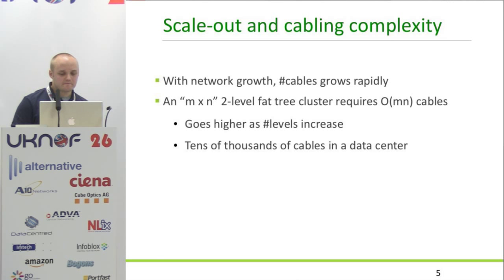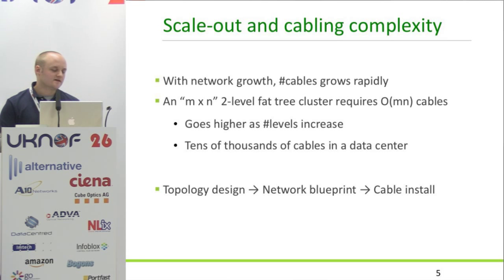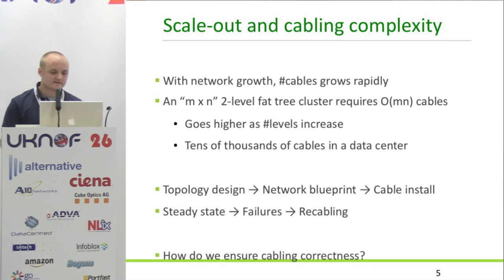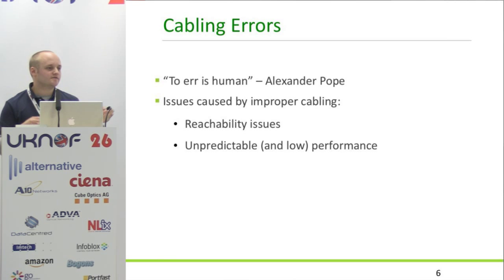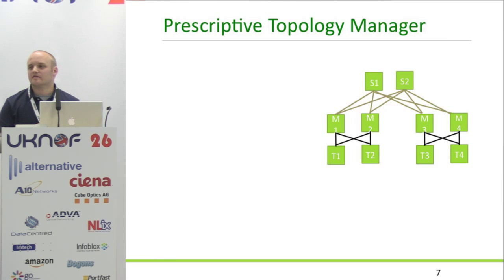The cabling can become a nightmare as these properties grow. Normally you'll give a design — maybe a Visio diagram with a cable reference — and hopefully the people installing the kit will follow that, but that's not always the case. Reachability and unpredictable low performance can all come up. If you've got a rack delivered and some of your spine and top-of-rack connections are the wrong way around, that can be a nightmare. This is where PTM comes into play. It allows us to describe the network in such a way that we can use it to document the network and verify the cabling.